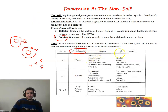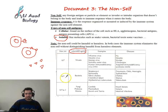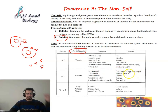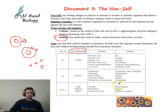Viruses include the influenza virus (flu), measles, mumps, Herpes zoster (chickenpox), and HIV which leads to AIDS. Bacteria are larger than viruses - around 10 to the power of minus 6 micrometers - such as Streptococci that cause pneumonia, otitis, and meningitis; Salmonella causing typhoid fever; Vibrio cholerae causing cholera; Clostridium tetani causing tetanus; and Mycobacterium tuberculosis causing tuberculosis.